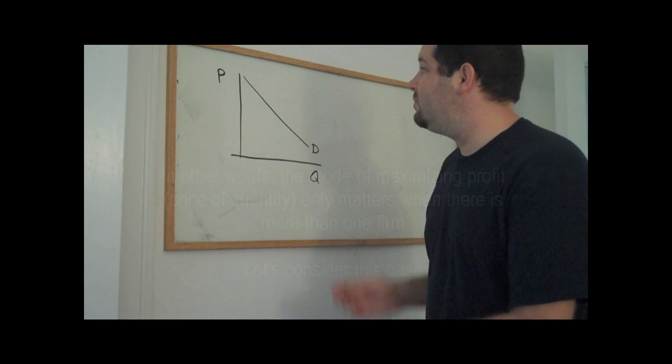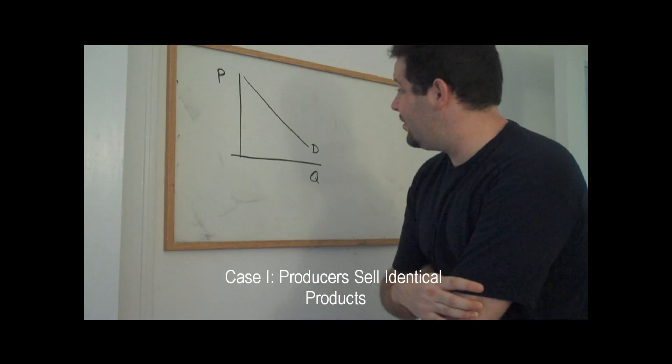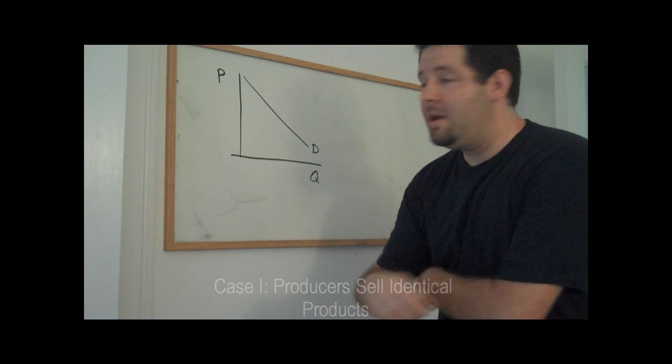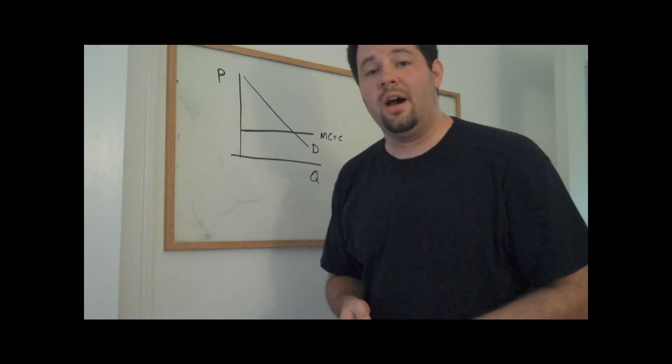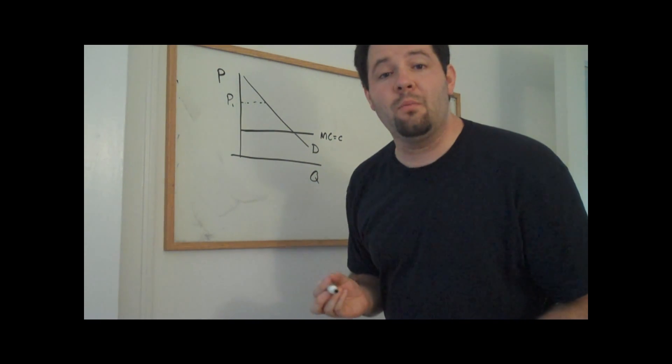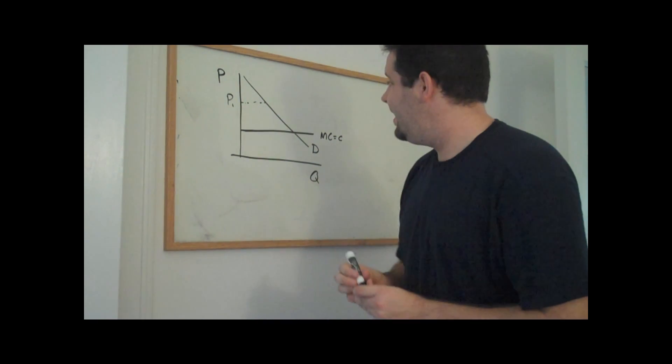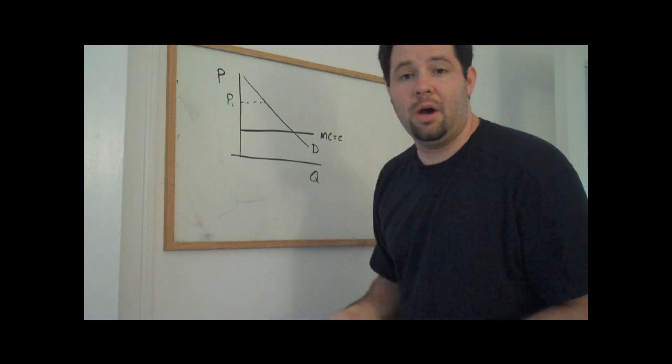And so consumers will say, whichever one has the lower price, that's going to be the one that I'm actually going to pick. Let's consider the simple case of constant marginal cost. Let's suppose that firm one sets a price of P1. In this case, firm one is going to be making positive profits and they'll sell out to that quantity.